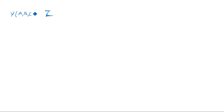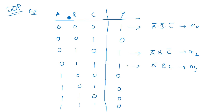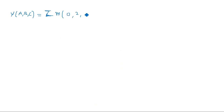We can write this as: Y(A, B, C) = Σm(0, 2, 3). This is the way of representing a Boolean expression using summation notation. In exams, this type of expression will be given and you are asked to simplify it. For example, Y(A, B, C, D) = Σm(1, 2, 3, 4, 5, 7) — like that it will be given and you must derive the simplified Boolean expression.